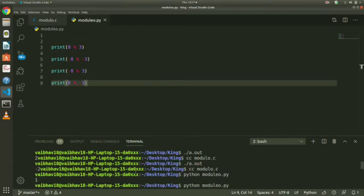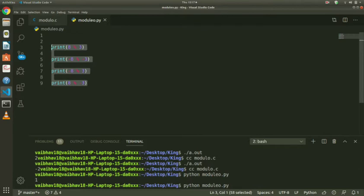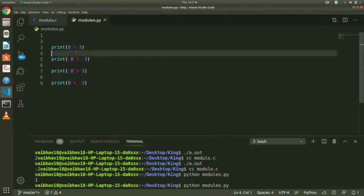Today we are going to explain an interesting topic: how the modulus operator works on negative numbers in Python. You're seeing the Python file here where I'm writing code. I have written test cases: both positive numbers, both negative numbers, one positive and one negative, and one negative and one positive. Let me show you the output and explain it on paper.